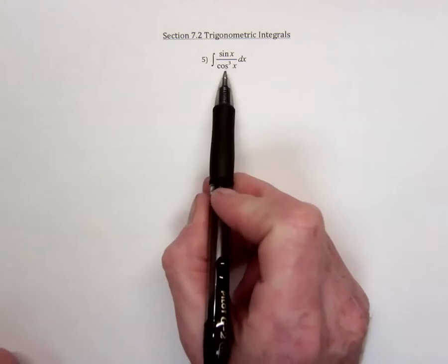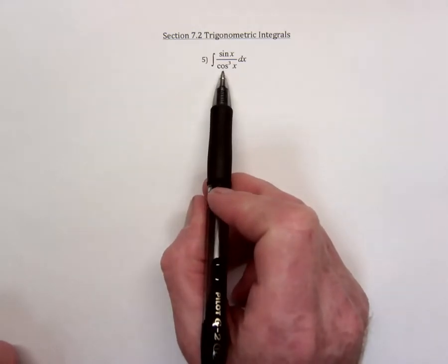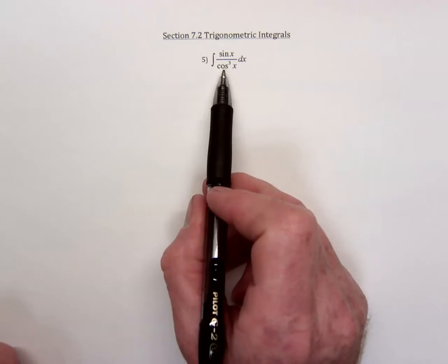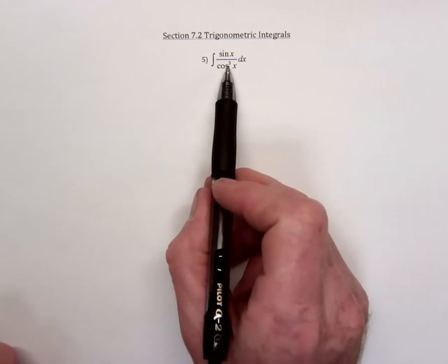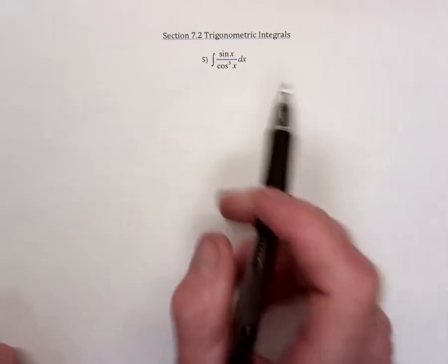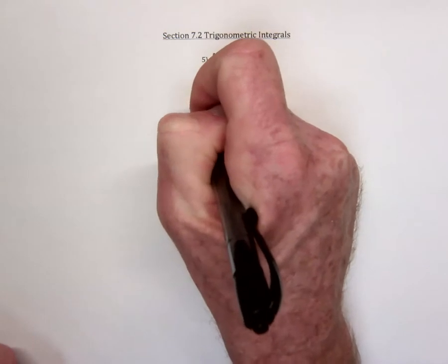Try cosine. Another guiding principle for the use of substitution is whatever is the innermost function, this one is inside of a cube and it's also inside of a fraction, and that is probably a good idea for the u.